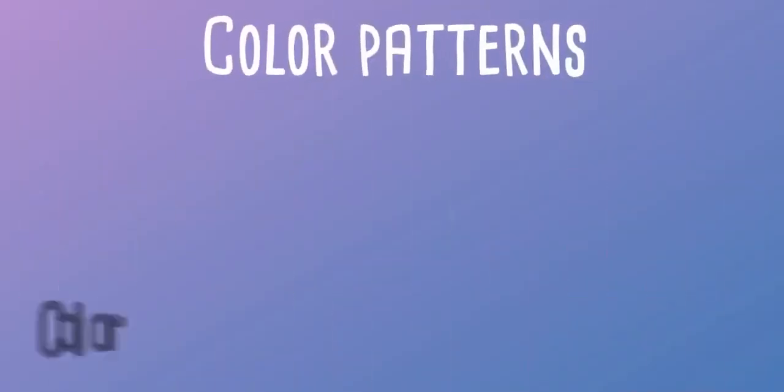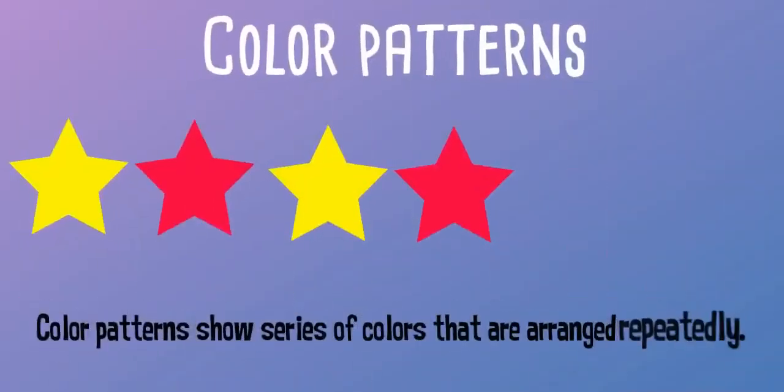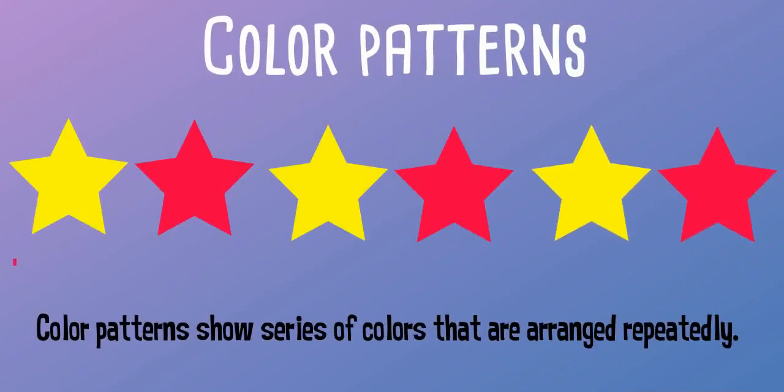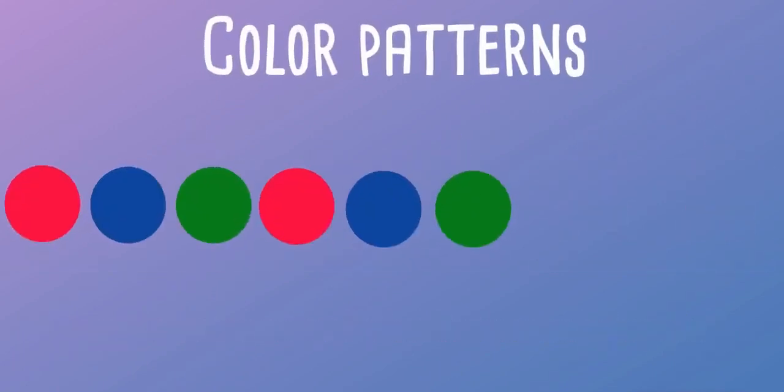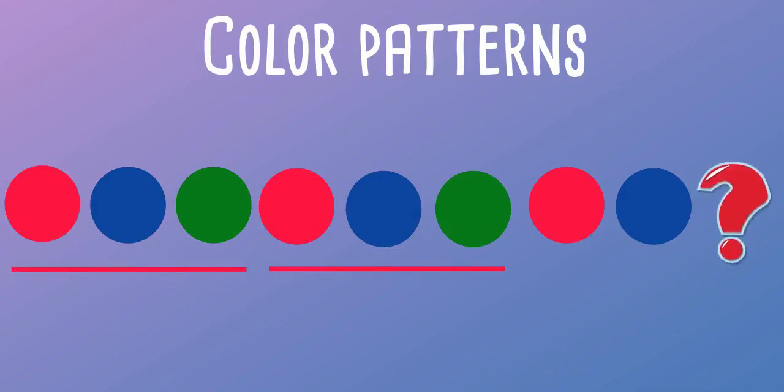We have color patterns. Color patterns show series of colors that are arranged repeatedly. In this example, the repeating part of the pattern is red circle, blue circle and green circle. So what comes next? The next color after the blue circle is a green circle.